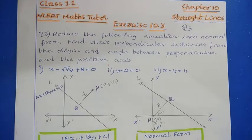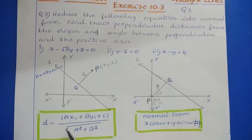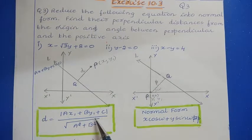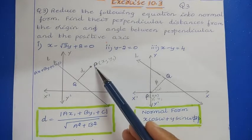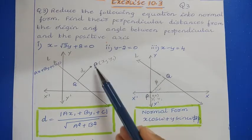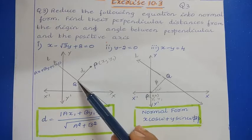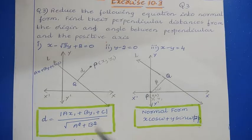Before solving the problem let us understand about the perpendicular distance from the origin. To find the distance of a point from a line we have the equation: d is equal to modulus of ax₁ plus by₁ plus c, divided by square root of a squared plus b squared. Suppose there is a line L and a point P on the xy plane with coordinates x₁ and y₁. We draw a perpendicular and calculate this perpendicular distance using this formula.